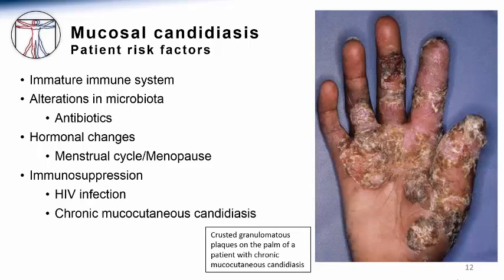However, severe forms of skin and mucosal candidiasis can be seen in patients who have suppressed immune systems. More extensive thrush and esophageal candidiasis can complicate disorders such as HIV infection, both during the initial acquisition of infection and especially during late-stage AIDS. As seen in the very disfiguring hand lesions on the slide, certain patients can develop severe forms of chronic and recurrent Candida infections. This condition is referred to as chronic mucocutaneous candidiasis, and it is associated with a number of genetic defects in TH1-mediated immunity.